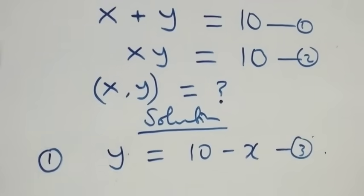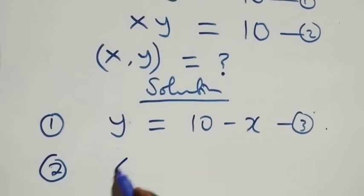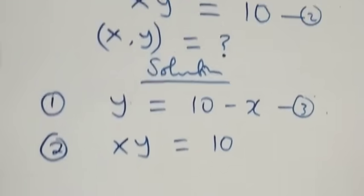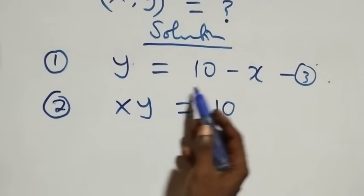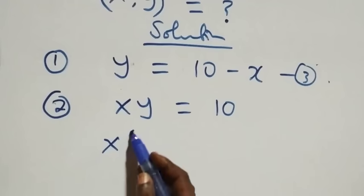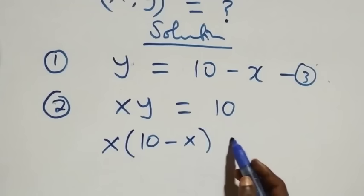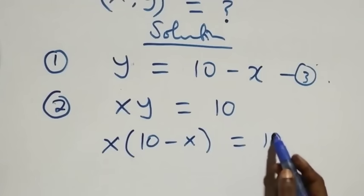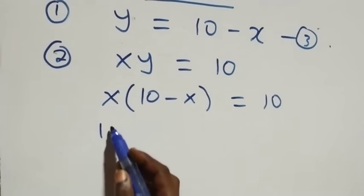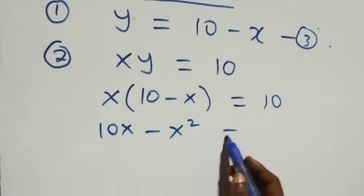From equation two, which is x times y equals 10, we substitute the value of y from equation three. This becomes x times (10 minus x) equals 10. When we open the bracket, this becomes 10x minus x squared equals 10.